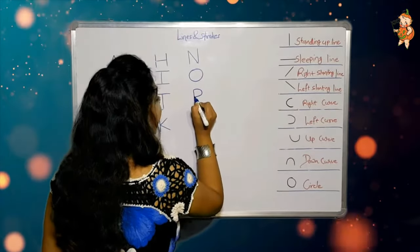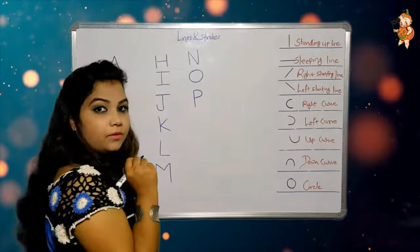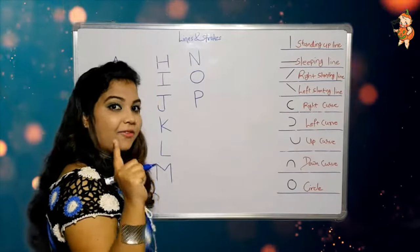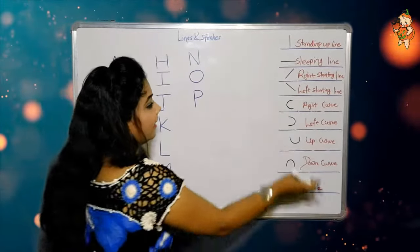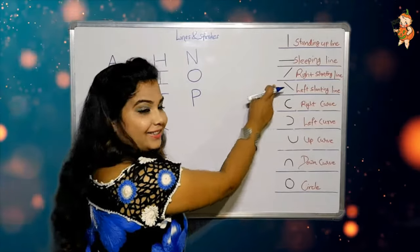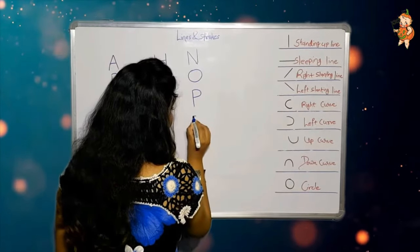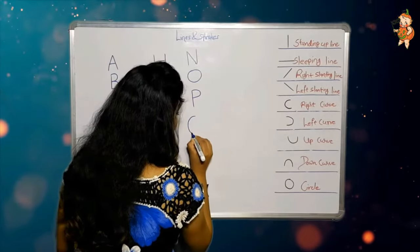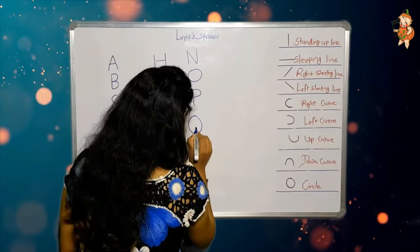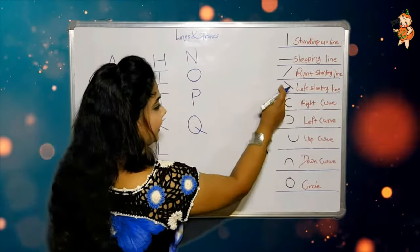Now how to make Q? One circle and one left slanting line. Very good — one circle and one left slanting line.